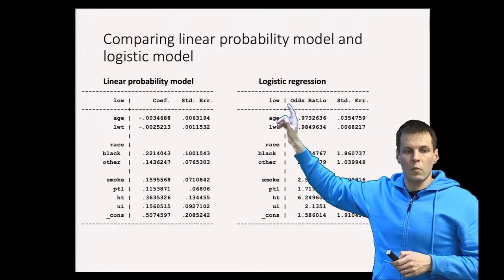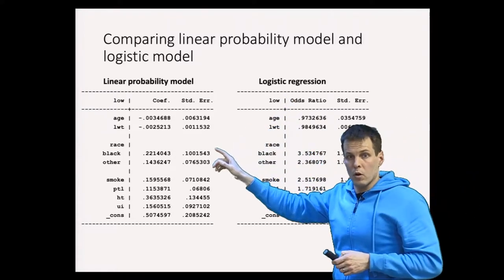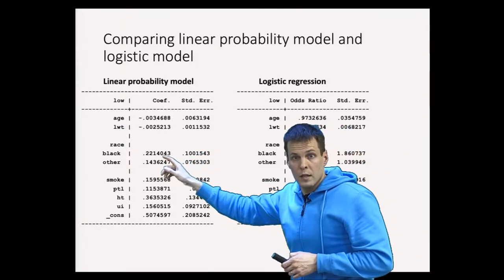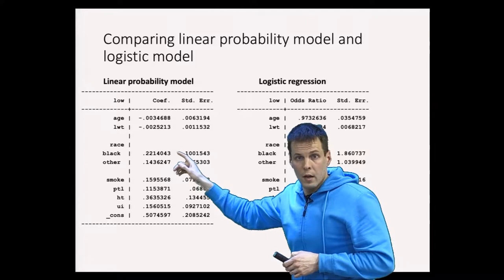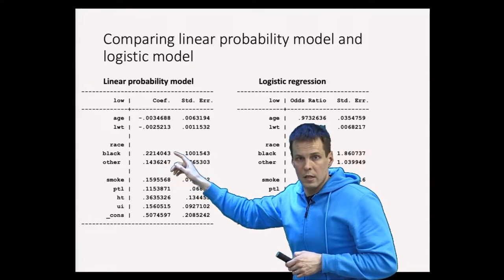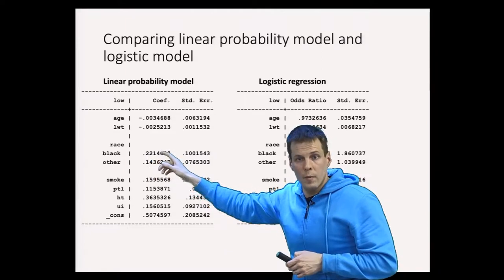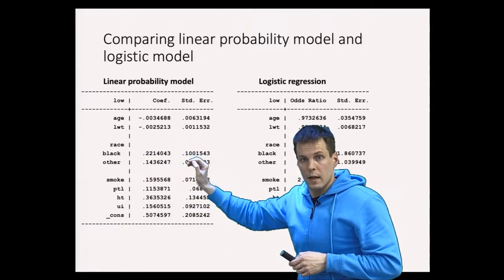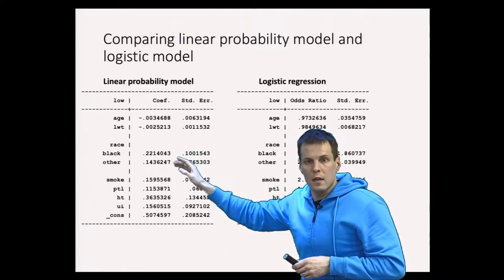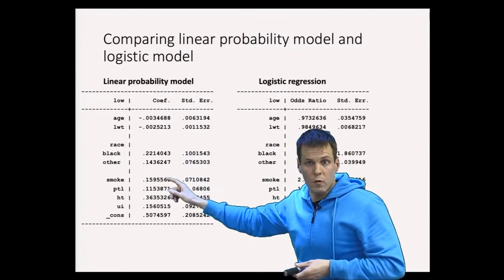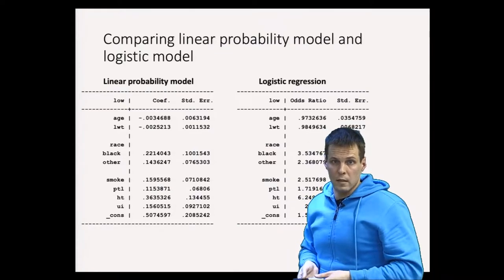We can see from the linear probability model it's easy to interpret. The predicted probability of having a low birth weight baby is 0.22 higher for black women than for white women, that is the reference category. It is 15% higher for smokers than for non-smokers. So we can directly interpret the effects.